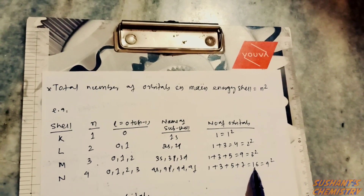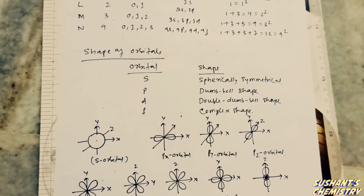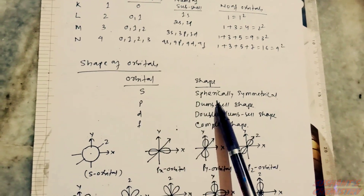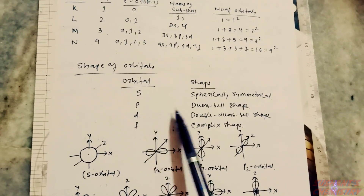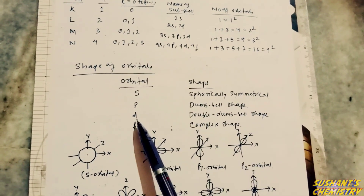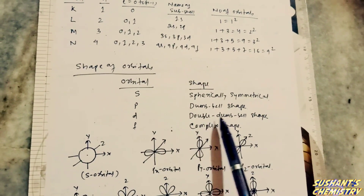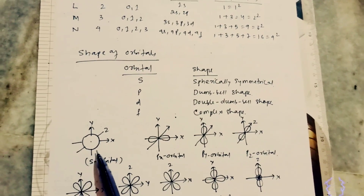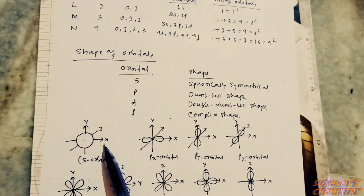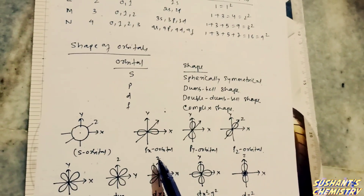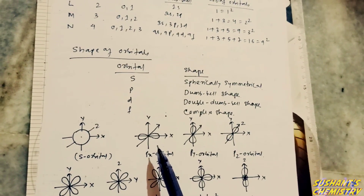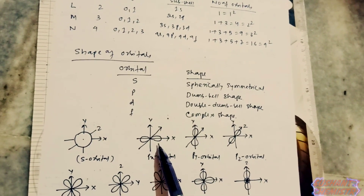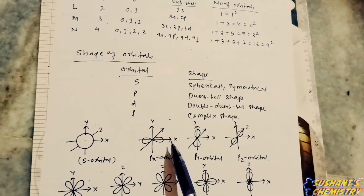Now we discuss the shape of orbitals. The s orbital has a spherically symmetrical shape. The p orbital has a dumbbell shape. The d orbital has a double dumbbell shape. The f orbital has a complex shape. The s subshell is spherically symmetrical along all axes x, y, and z. The p subshell has three orbitals: px, py, and pz.